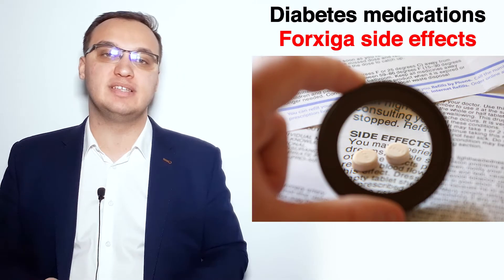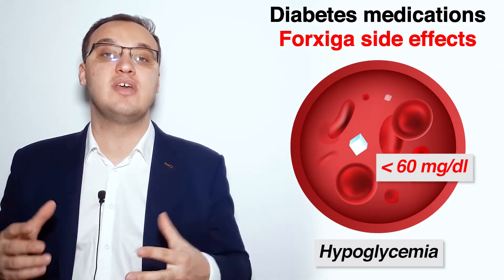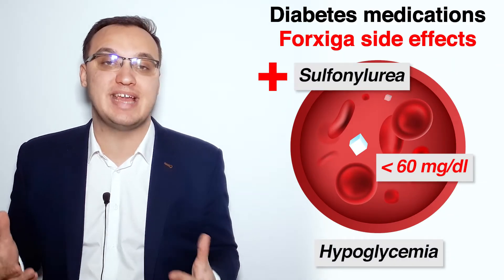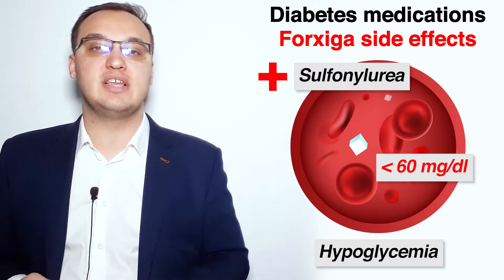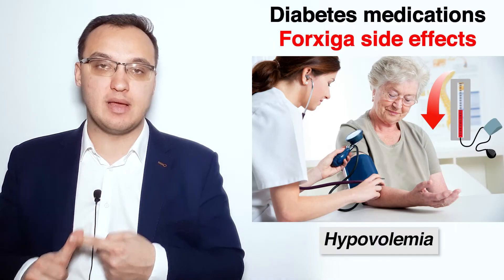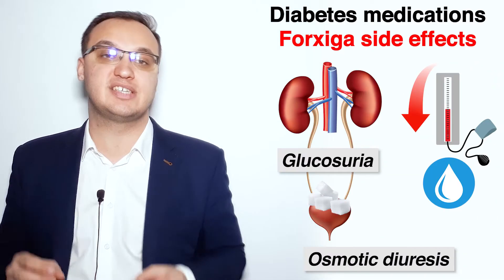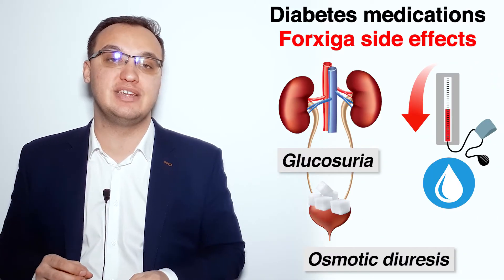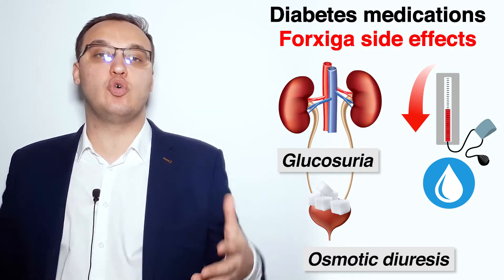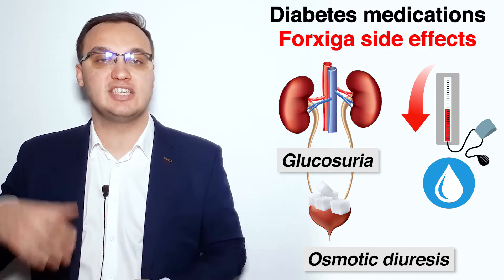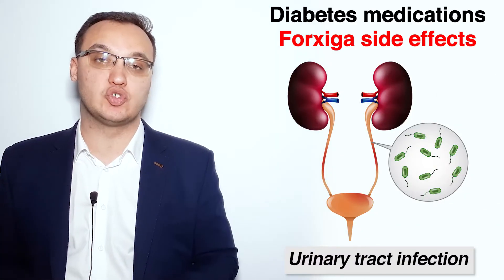The side effects of these medications include hypoglycemia, but usually only when given with other medications like sulfonylurea. Other side effects include hypovolemia, meaning low blood pressure, since not only glucose is excreted through the kidneys but also water follows — a process called osmotic diuresis. Additionally, due to the glucosuria, urinary tract infections can also occur.